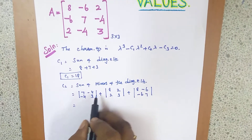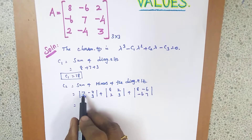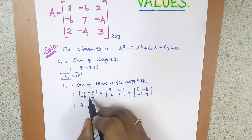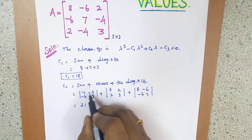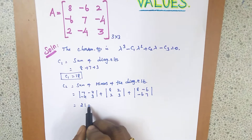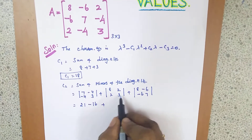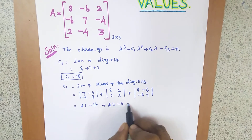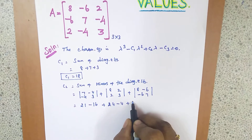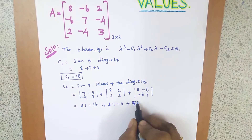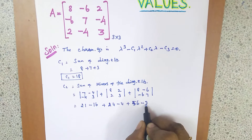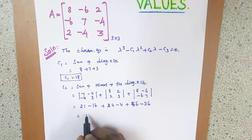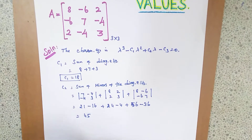Evaluating: first minor gives 7×3 - (-4)×(-4) = 21 - 16 = 5. Second minor gives 8×3 - 2×2 = 24 - 4 = 20. Third minor gives 8×7 - (-6)×(-6) = 56 - 36 = 20. So C2 = 5 + 20 + 20 = 45.